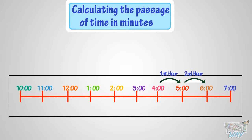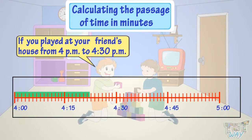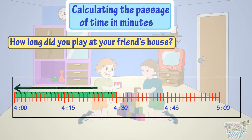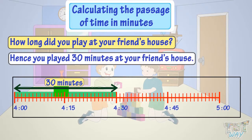Okay, if you played at your friend's house from 4 to 4:30, how long did you play at your friend's house? You need to hop 30 times to reach 4:30 from 4 o'clock. So, 30 minutes are there between 4 o'clock and half past 4. Hence, you played for 30 minutes at your friend's house.